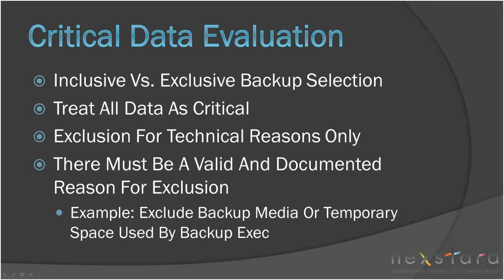This is because if something is overlooked in an inclusive approach, it can mean disaster. However, if something is overlooked in an exclusive approach, the data will still be accounted for. In an exclusive scheme, there will typically be items that have valid reasons for being excluded. An example would be excluding the backup volume and temporary locations used by Backup Exec so that they do not disrupt the backup process.